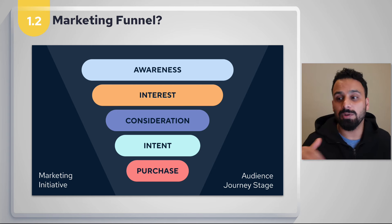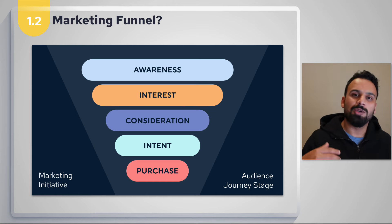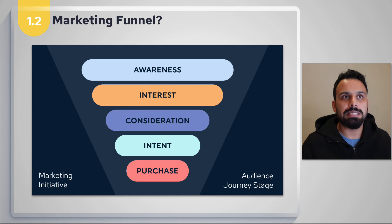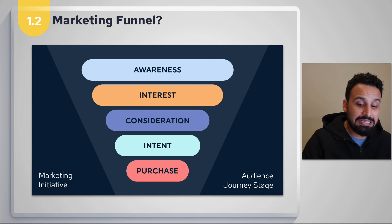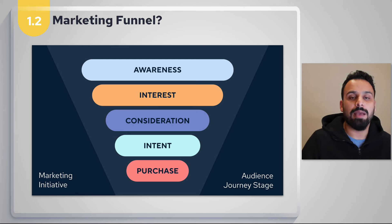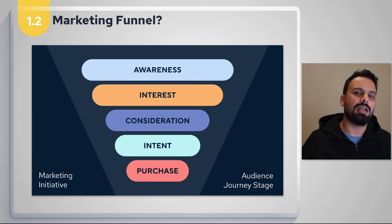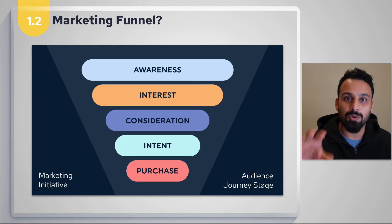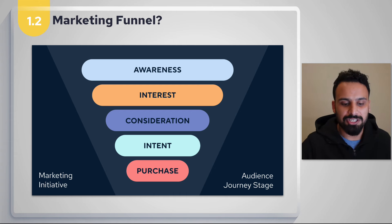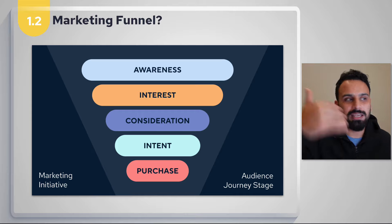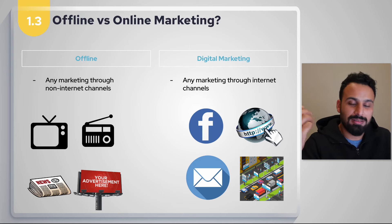Intent is an extension of consideration — when you have people who consider you but don't include you in their final purchase list, you run campaigns to develop their intent further. Purchase, as an audience bucket, is how many people you filter down to who actually buy. As a marketing initiative, you'd run a search campaign — for example, targeting someone Googling 'best fuel-efficient car in UAE' — to capture people who already have intent.